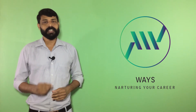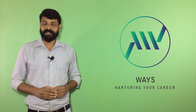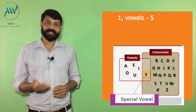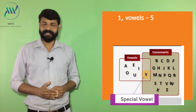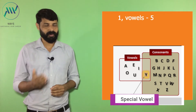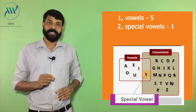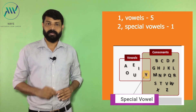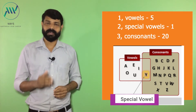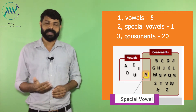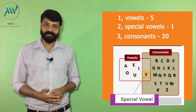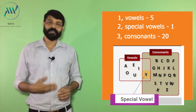Hi everyone, it is Prajish from Viz. In today's session we are talking about vowels and consonants. As we all know, there are 26 letters in the English alphabet. Based on the way it sounds, we can divide them into three categories: first, vowels — A, E, I, O, U; second, special vowel — the letter Y; and third, consonants — excluding these six letters, all other 20 letters are known as consonants.